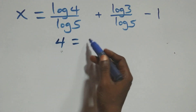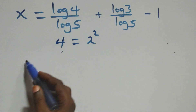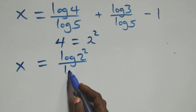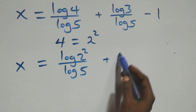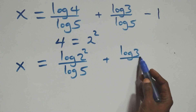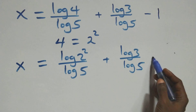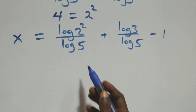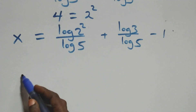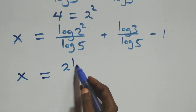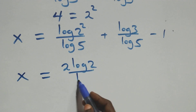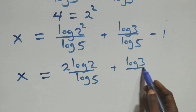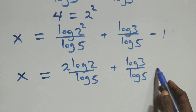We express 4 as 2 squared, so we have x equals log(2 squared) over log 5 plus log 3 over log 5 minus 1. Applying the power rule of logarithms, the 2 comes down: x equals 2 log 2 over log 5 plus log 3 over log 5 minus 1.